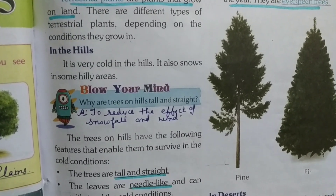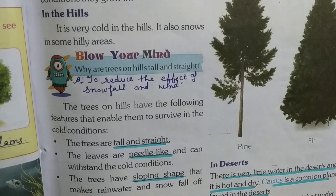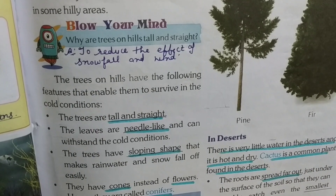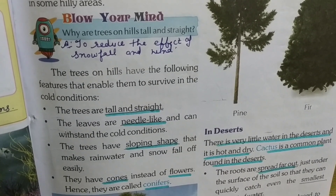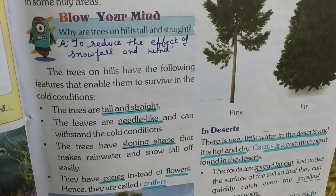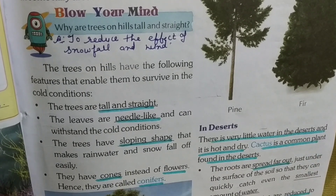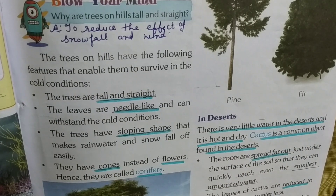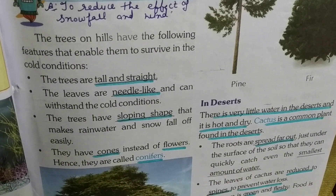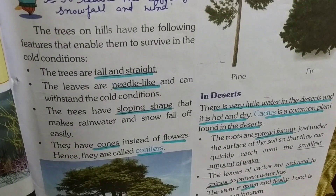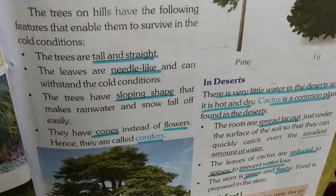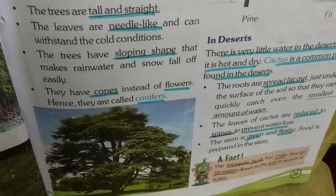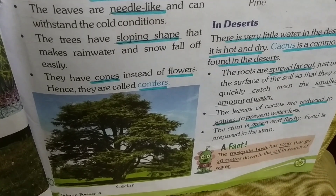In the hills, it is very cold and it also snows in some hilly areas. Why are trees on hills tall and straight? To reduce the effects of snowfall and wind. The trees on hills have the following features: the trees are tall and straight; the leaves are needle-like and can withstand the cold conditions; the trees have a sloping shape that makes rainwater and snow fall off easily.